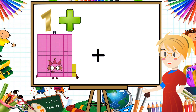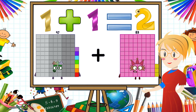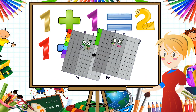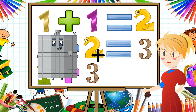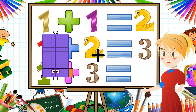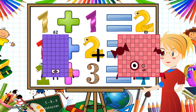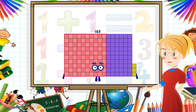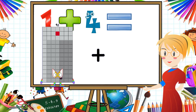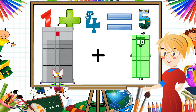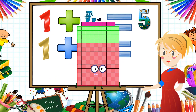97 plus 94 equals 191. 62 plus 101 equals 163. 91 plus 57 equals 148.